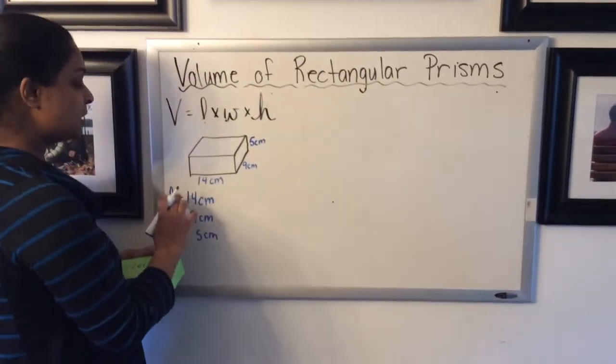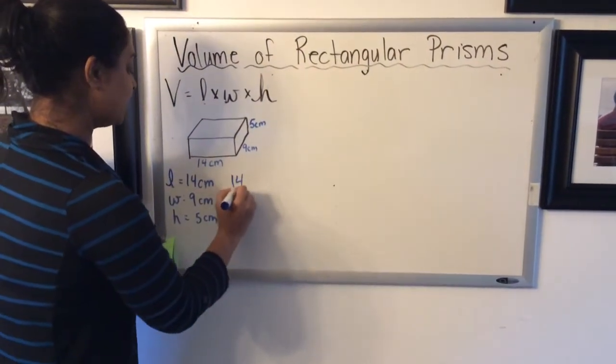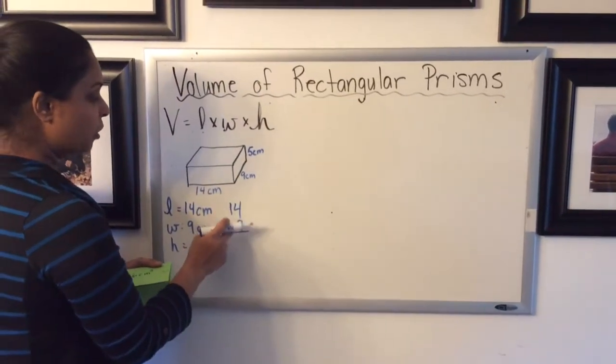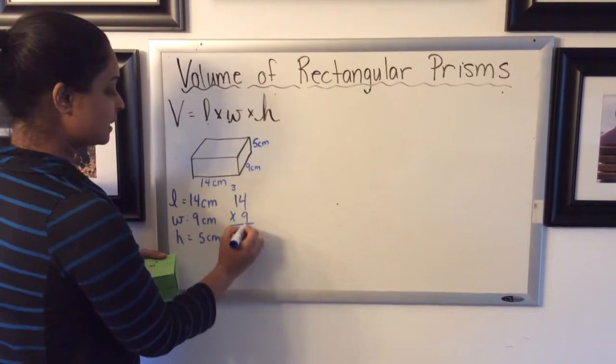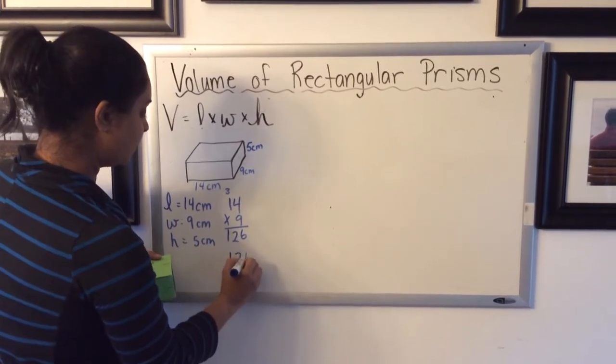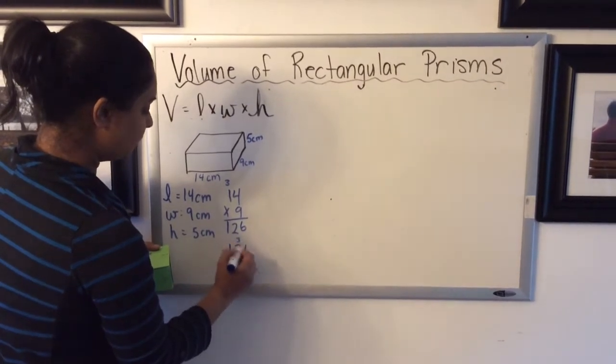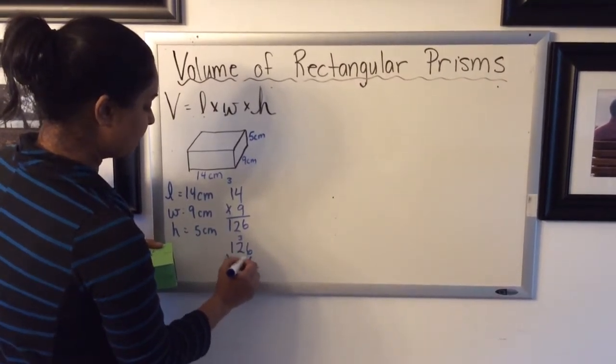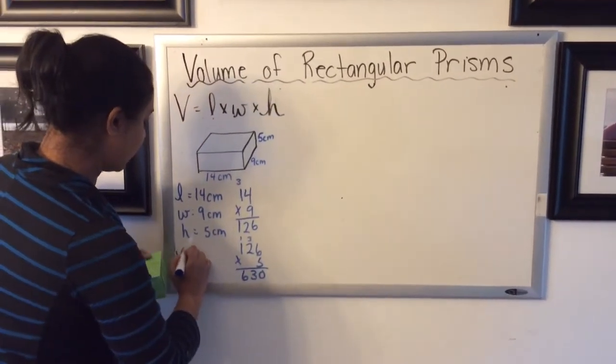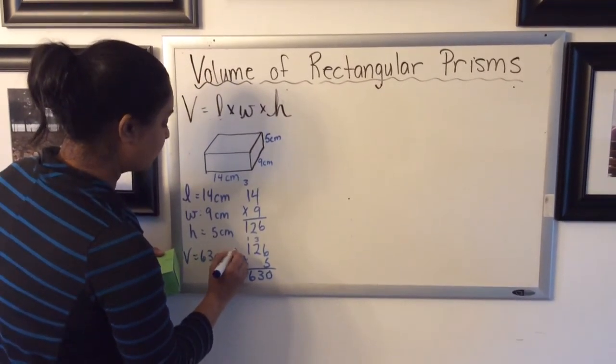Now what I'm going to do is calculate length times width first. I like to do this in steps and in standard algorithm just to make sure that I am doing my calculations carefully. 4 times 9 is 36, 9 times 1 is 9 plus 3 more is 12, and then I'm going to take that number and multiply by 5 for my height. 6 times 5 is 30, 2 times 5 is 10 plus 3 more is 13, 1 times 5 is 5 plus 1 more is 6. So I have a final volume of 630 centimeters, and now I have to put cubed.